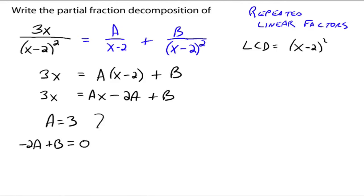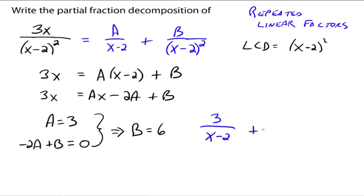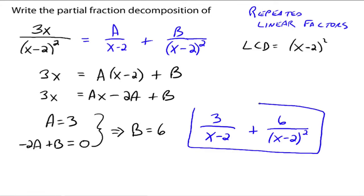If A equals 3 and negative 2A plus B equals zero, that implies B has to equal six. So the partial fraction decomposition would be three over x minus two plus six over x minus two squared.